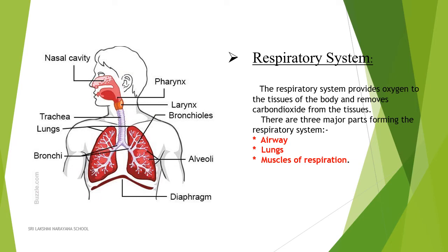Now let us move on to the next system of our body: the respiratory system. In the respiratory system, oxygen is supplied to the tissues of our body and simultaneously carbon dioxide is removed. There are three major parts in the respiratory system: the airway, lungs, and muscles of respiration.